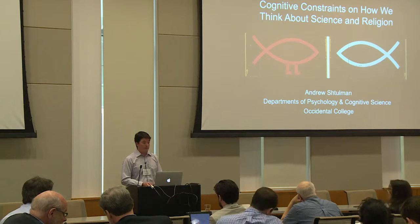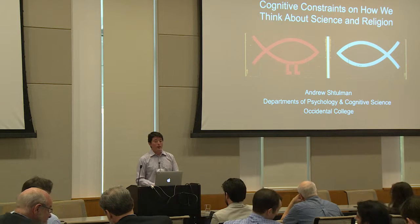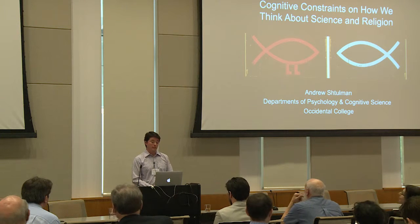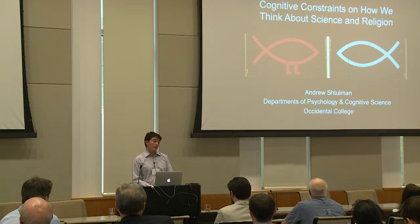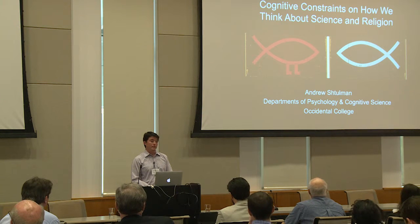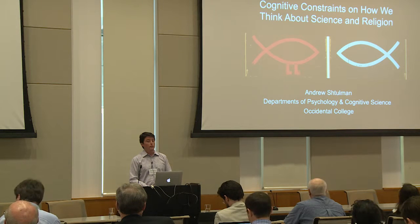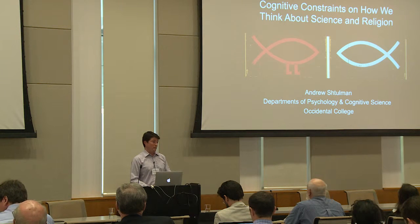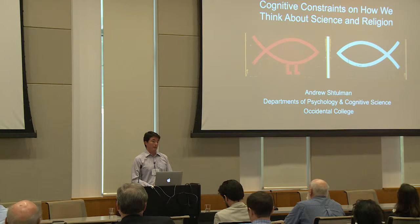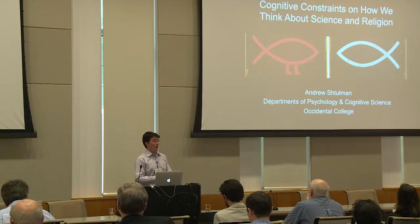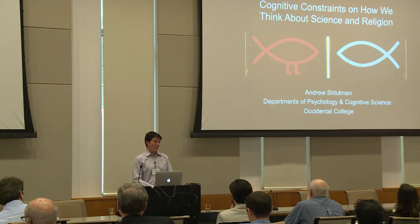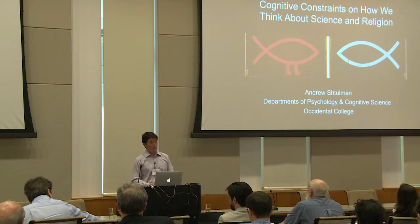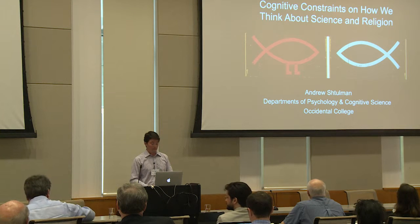Today I'm going to talk about cognitive constraints on how we think about science and religion. In particular, I want to talk about cognitive constraints on our understanding of the foundations of scientific claims and the foundations of religious claims. I will be building off of some of the work that Paul was talking about with kids, following that up with adults.